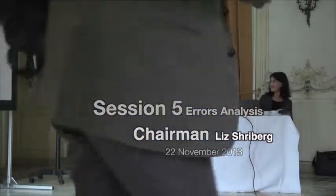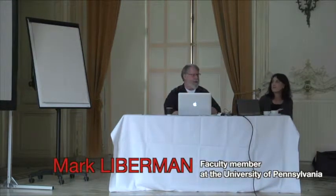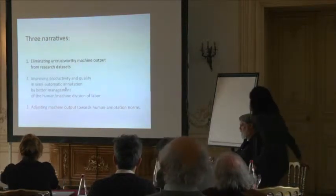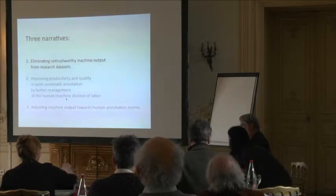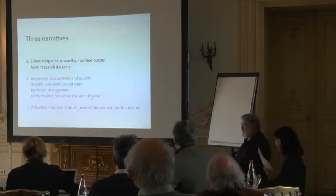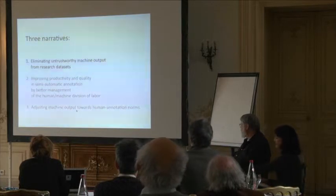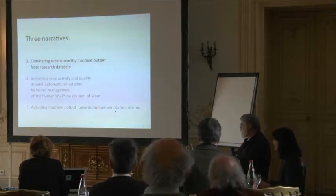I'm going to be talking about three different things, the first two of which are fairly closely related, and the third is thrown in because I was supposed to have a speech part. The first part is about eliminating untrustworthy machine output from research datasets — really an appeal for help in what I think is a very exciting opportunity in digital humanities. The second is about improving productivity and quality in semi-automatic annotation by better management of the human-machine division of labor, with results involving a two-order-of-magnitude increase in productivity. The third will be a simple example of adjusting machine output toward human annotation norms.